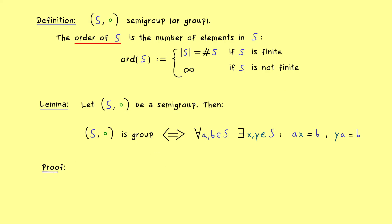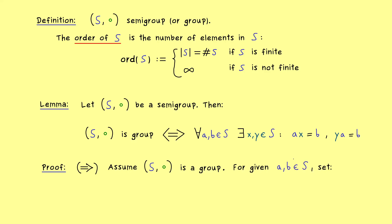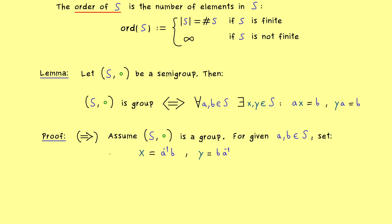Let's start with the easy implication: left to right. We already assume that S is a group, and then the question is simply: for given a and b, what are x and y? This is not complicated at all because we already have inverses. For example, x is simply a-inverse times b — this is a well-defined element and satisfies the equation. Similarly, y should be given as b times a-inverse, which also satisfies its equation. We are done with this implication.